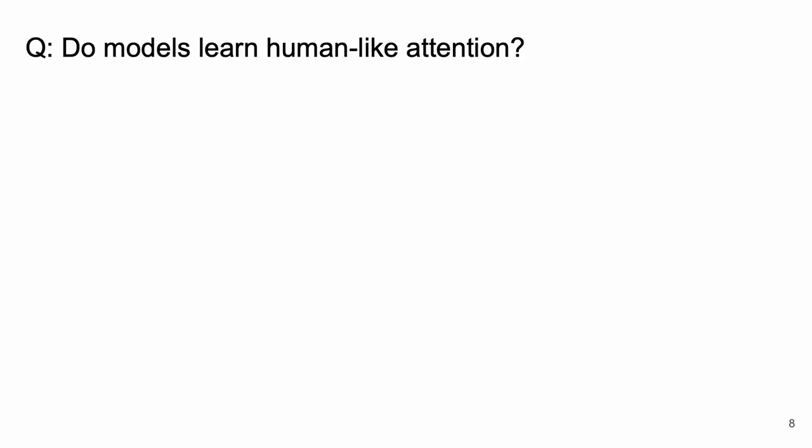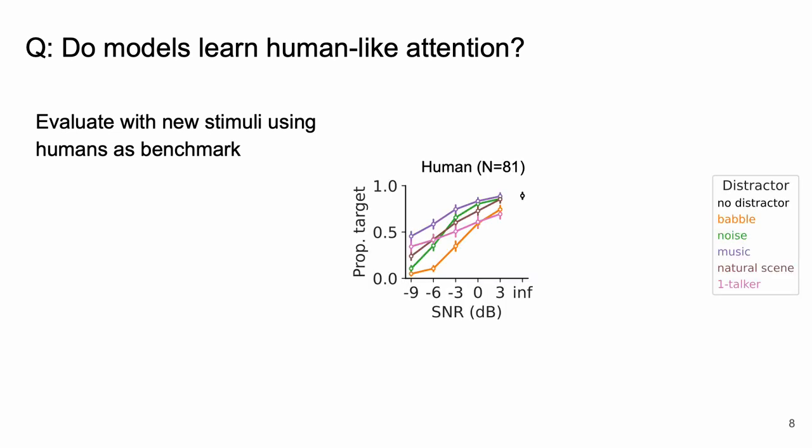For a first question we're going to ask if models can learn human-like attention. To do this we're going to evaluate the models on new stimuli and compare them to a population of humans run on the same experiment as a benchmark. We collect a large sample of participants across a range of distractor conditions presented at various SNRs. The human results are consistent with prior work.